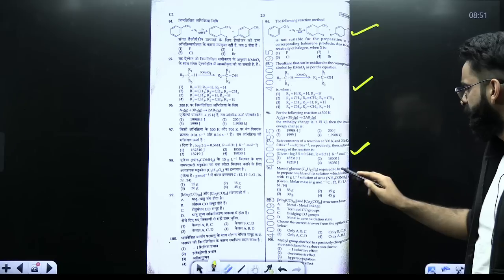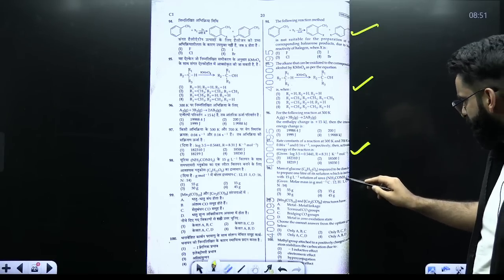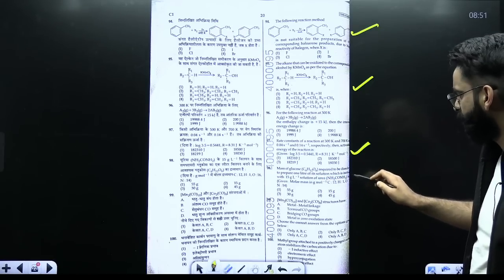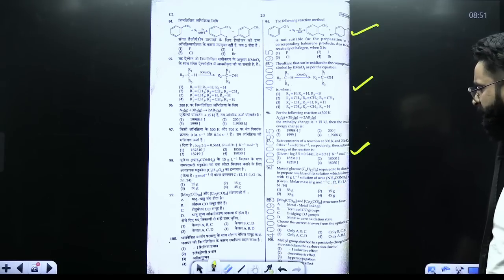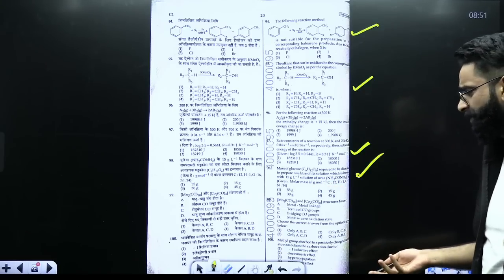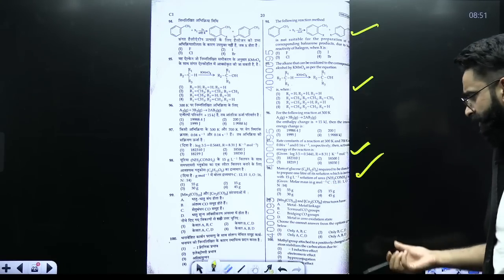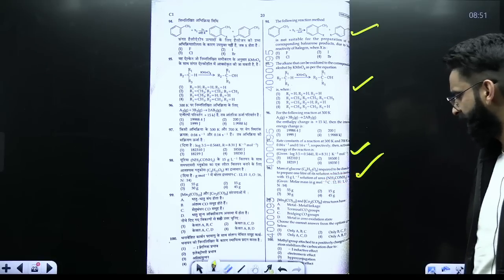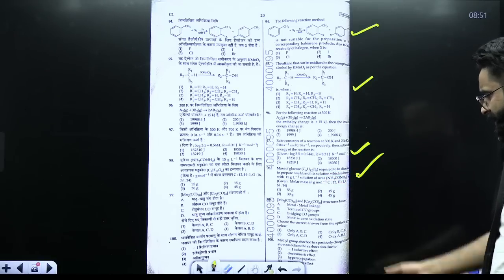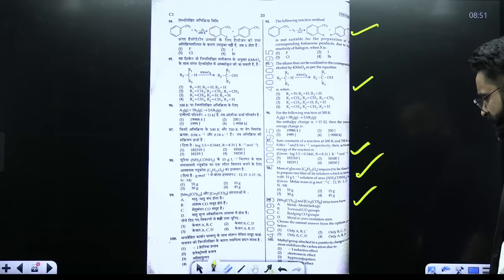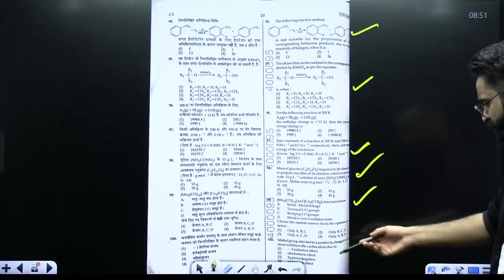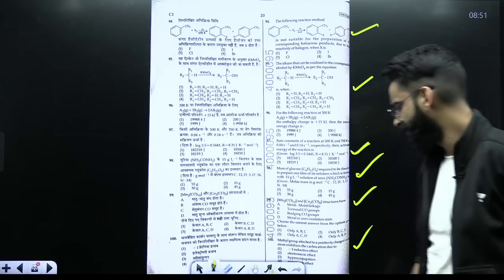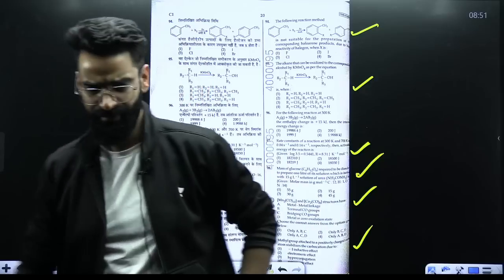Similarly, mass of glucose required to dissolve to prepare one liter of solution, which is, I think it will be isotonic. With 15 grams per liter solution of urea. Again, question based on the solution. Okay? Simple question only, but this might take a bit of time for the calculation purpose. From the coordination chemistry part. Methyl group attached or positively charged. Carbonitum stabilized the carbocation due to, you know, due to hyperconjugation most appropriate. Perfect.